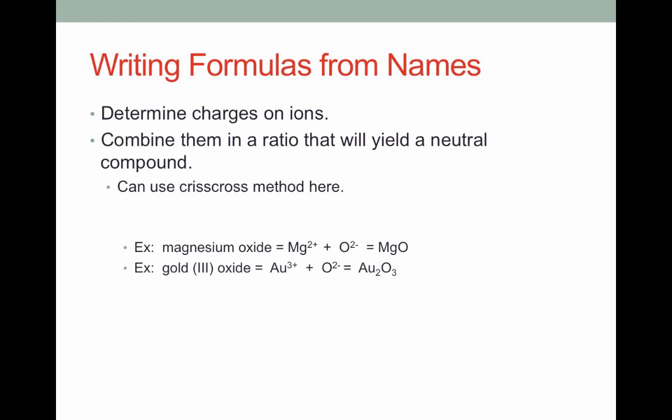Here's an example containing a transition metal. Here we're told that gold Au has a 3 positive charge. The 3 Roman numeral indicates the charge. We know again that oxygen is in group 16 and will always have a negative 2 charge. So we get Au2O3. We need 2 positive 3s to balance out with 3 negative 2s, overall giving us a neutral compound.